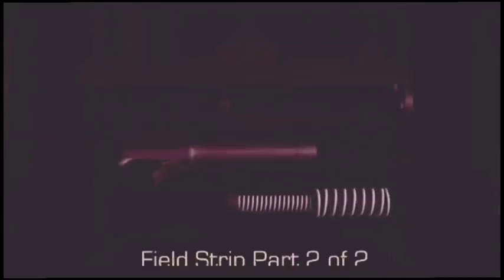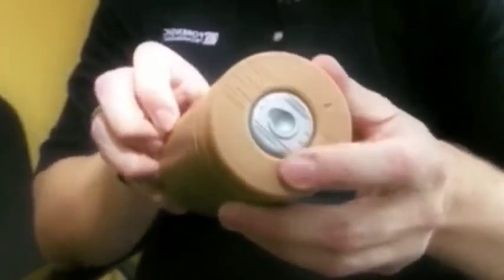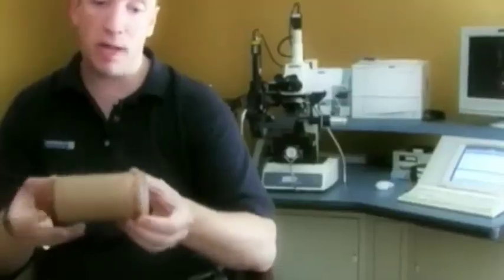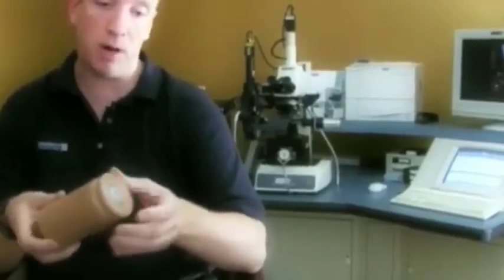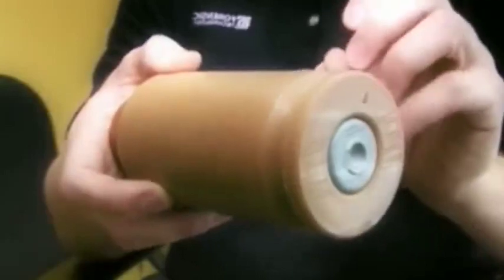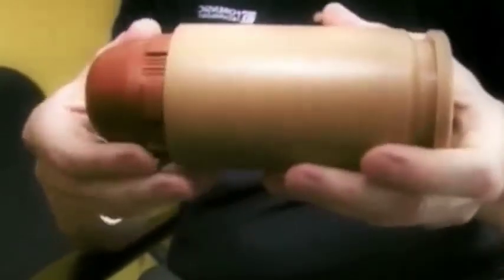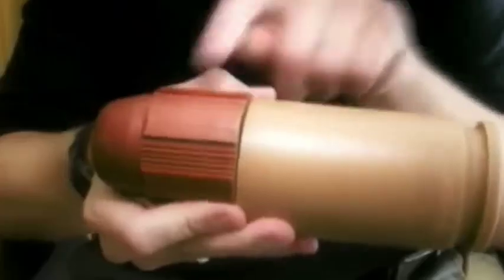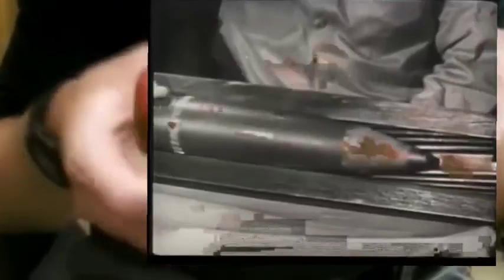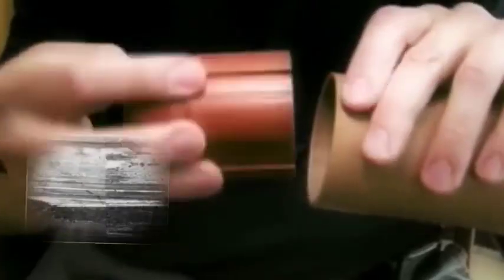Firearms examiners typically use comparison microscopes to examine the evidence. A cartridge has four main components: the bullet, the cartridge case itself, the primer on the back, and gunpowder on the inside. During the firing sequence, the firing pin strikes the primer, the spark makes the powder burn, which builds pressure and causes the bullet to go down the barrel. The rifling marks inside the barrel cause the bullet to twist, dragging across the surface of the bullet, creating channels and grooves with a unique pattern of stria all the way around.